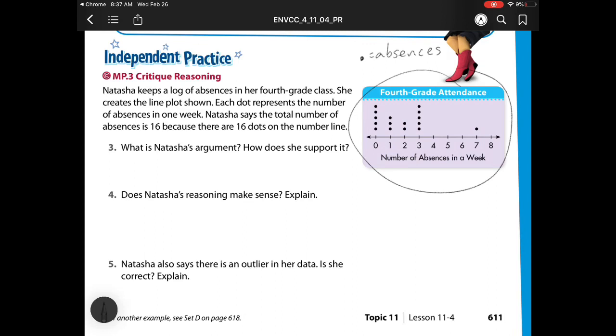So Natasha says there are 16 absences, and then how does she support it? She supports it because there are 16 dots.